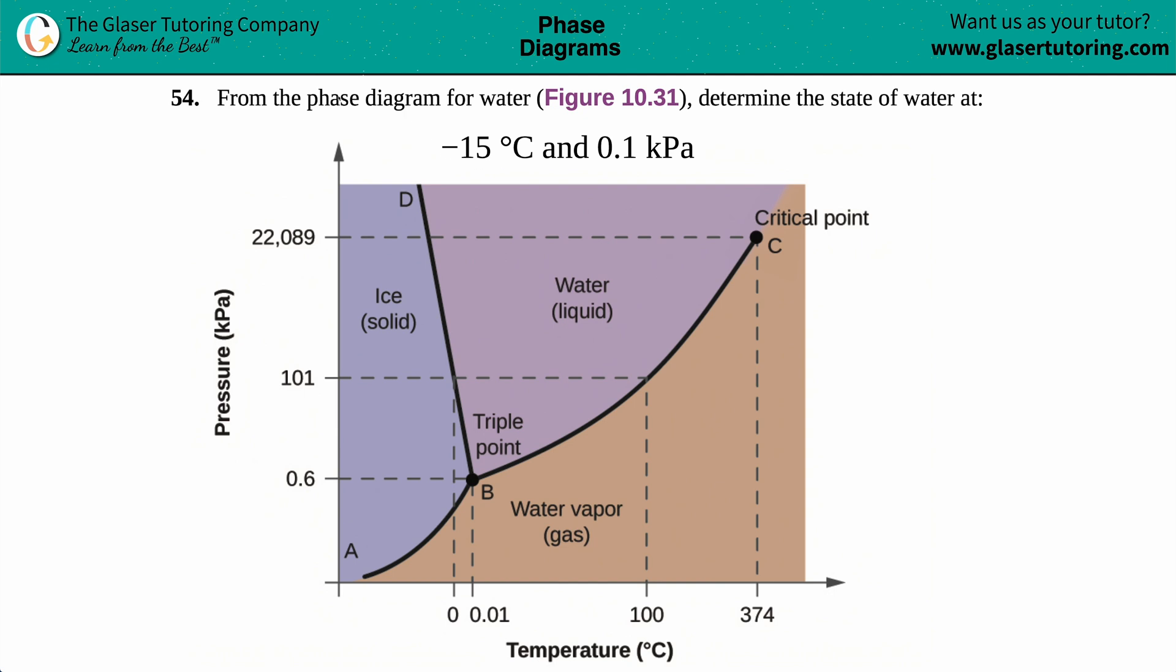Number 54. From the phase diagram for water, which is this figure right here, figure 10.31, determine the state of the water at negative 15 degrees Celsius and 0.1 kilopascals.